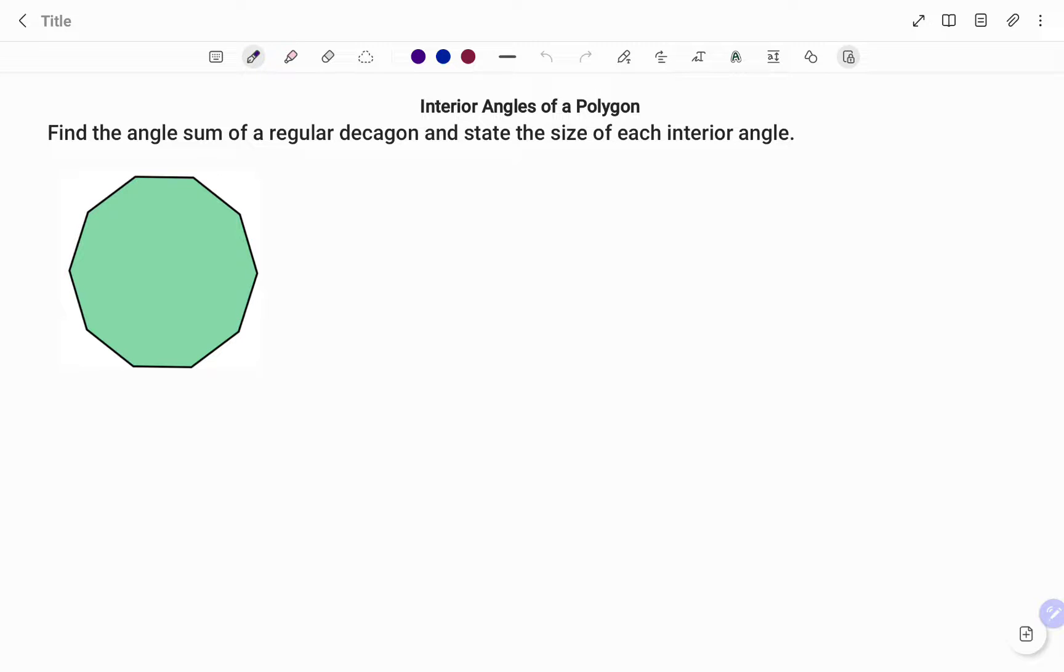For the example given, we have to find the angle sum of a regular decagon and state the size of each interior angle. We've been told we are looking for the sum of the interior angles of a decagon.